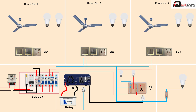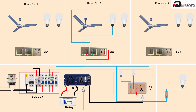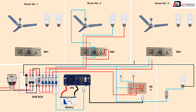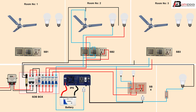Switchboard or socket connection, output outgoing to ceiling fan connection room two. Positive line or IPS line connection, negative line to electric line. Ceiling fan negative line, positive line connection, negative line, positive connection. Electric bulb condition.